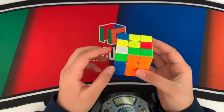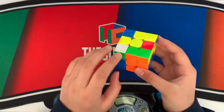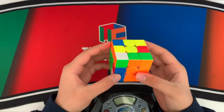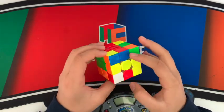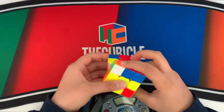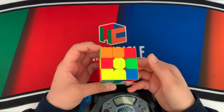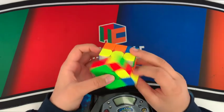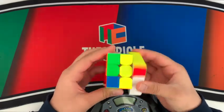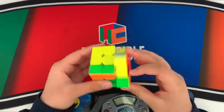And then I notice these two pairs. And to separate these two, it would take more moves than to separate these two. So I go to separate that, and then I solve this into the back like that, and then I solve the remaining pair, and that is how I would solve the F2L case, and then just finish the solve.